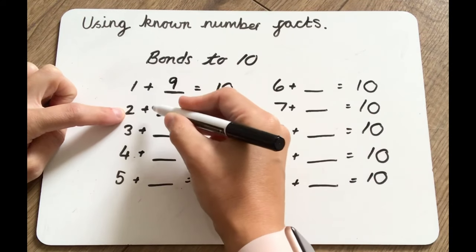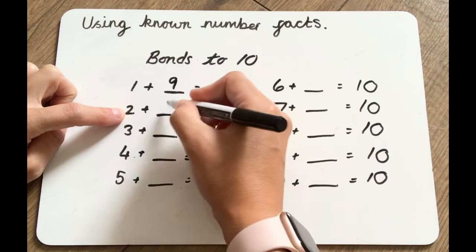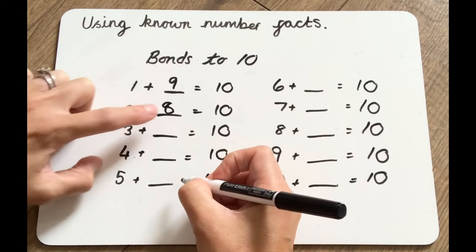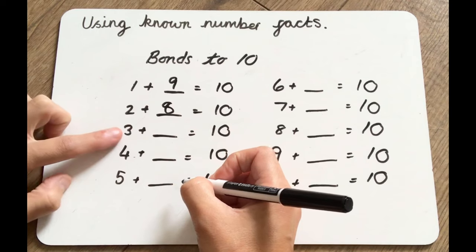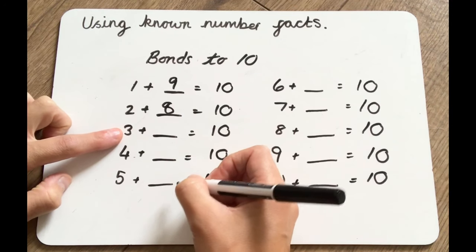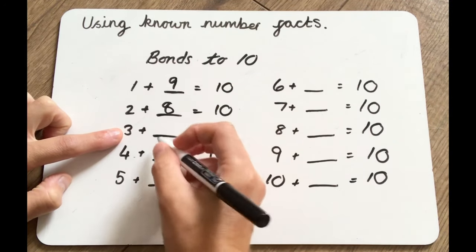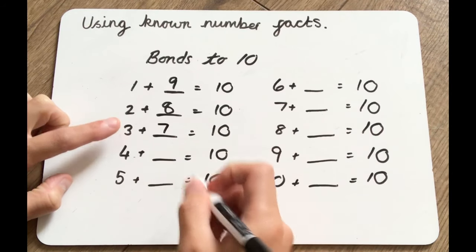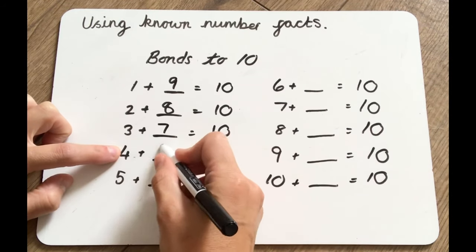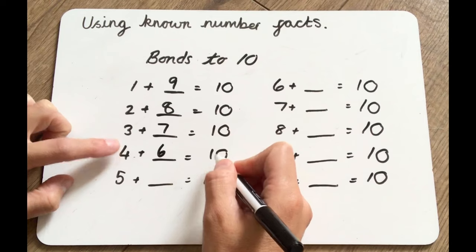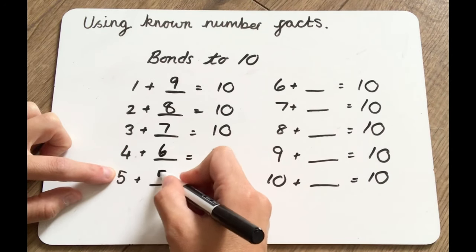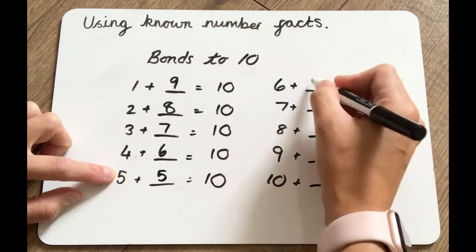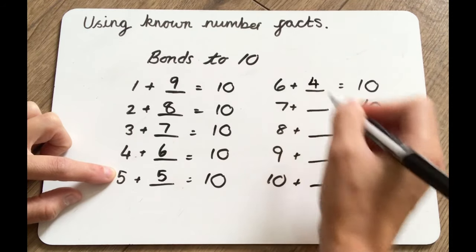If we've got 2, what do we need to add to 2 to make 10? 8. So 2 add 8 equals 10. If we've got 3, what do we need to add to 3 to make 10? 7. So 3 add 7 equals 10. 4 add 6 equals 10. 5 add 5 equals 10. 6 add 4 equals 10.